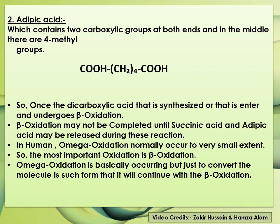In humans, omega oxidation normally occurs to a very small extent, so the important pathway remains beta oxidation. Omega oxidation basically occurs just to convert the molecule into a form that allows it to continue with beta oxidation. Thank you so much. In the next lecture, we will discuss something else relating to the components of fatty acids.